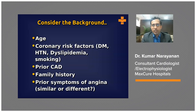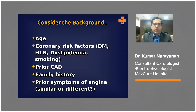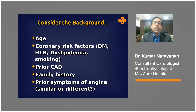The second point is to consider the background — what kind of patient is presenting with this pain? Consider the age: a 20-year-old fit man with no risk factors and sharp localized pain is a very different scenario from a 55-year-old middle-aged smoker with vague discomfort. Then look at classical coronary risk factors: diabetes, hypertension, hyperlipidemia, smoking, and family history. Also consider whether the patient already has prior coronary artery disease, as the risk of a recurrent event is higher in such individuals.